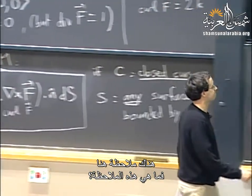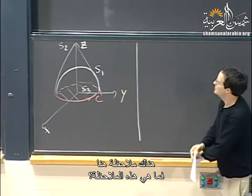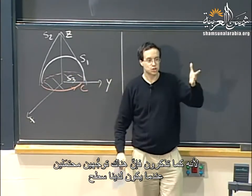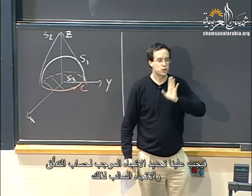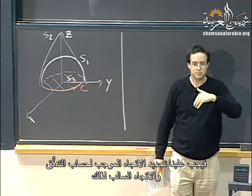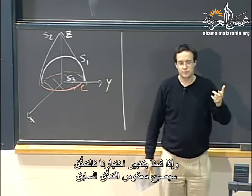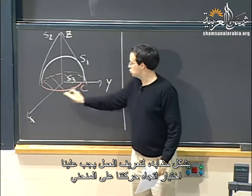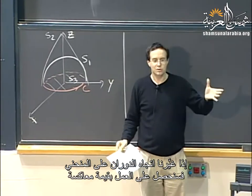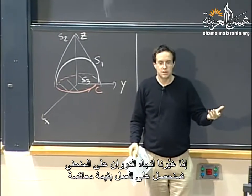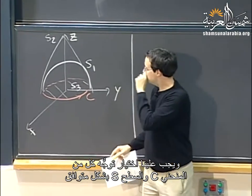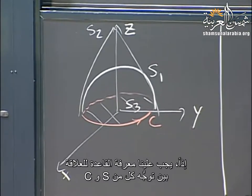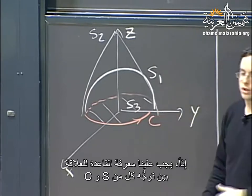There's a catch: we have to figure out what conventions to use because when we have a surface there are two possible orientations. We have to decide which way we count the flux positively. Similarly, to define the work I need to choose which direction to go around the curve. So I have to orient the curve C and the surface S in compatible ways — we need a rule for how the orientation of S and that of C relate to each other.